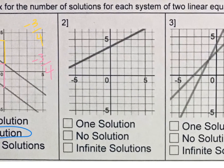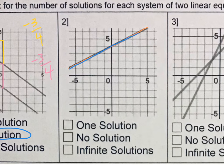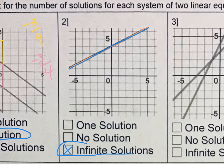When I take a look at number 2, I see that this is a thicker line, indicating there's a line and then another line right in the exact same spot. That means they share the exact same points — everything is the same on the line. They're twins, or twinfinite solutions. If they're the same line, it's infinite solutions.